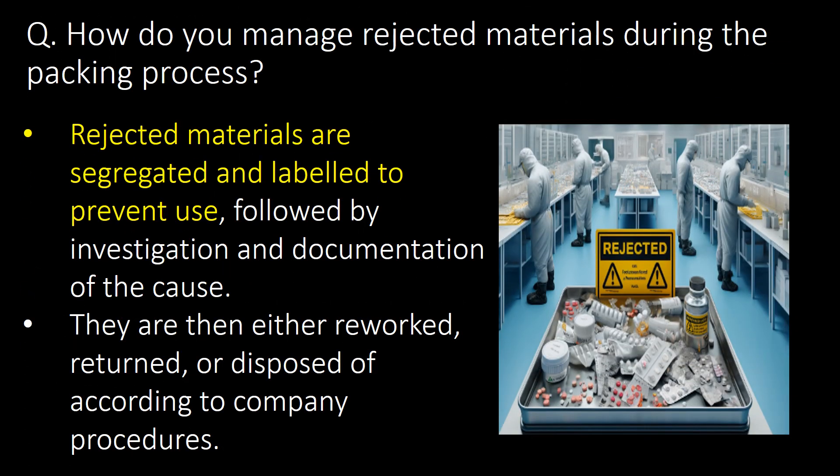How do we manage rejected materials during the packing process? Rejected materials are segregated and labeled to prevent use, followed by investigation and documentation of the cause. They are then either reworked, returned, or disposed of according to the company's procedure.